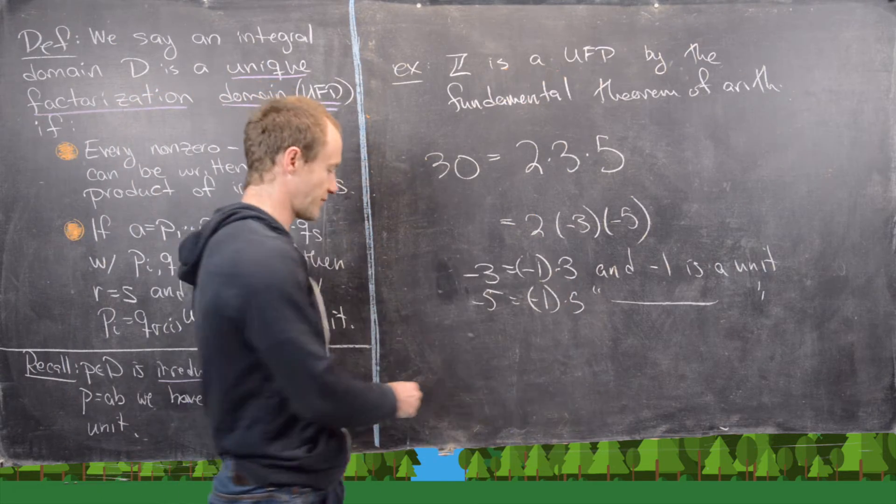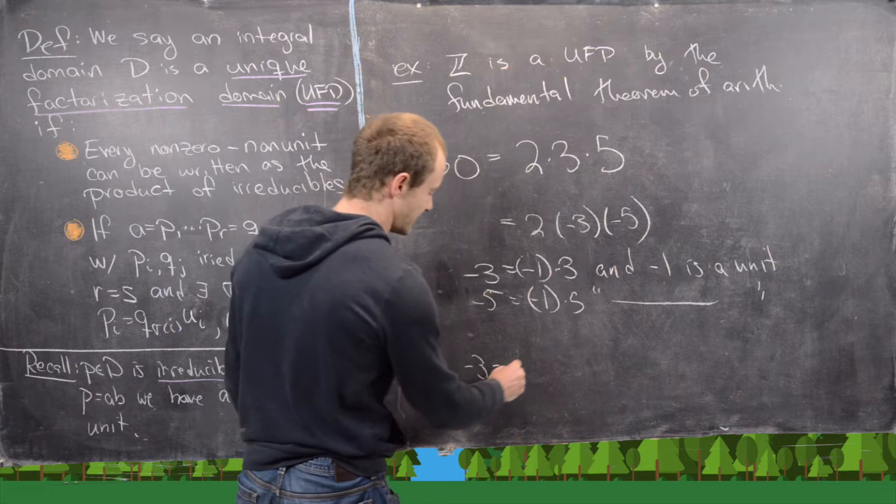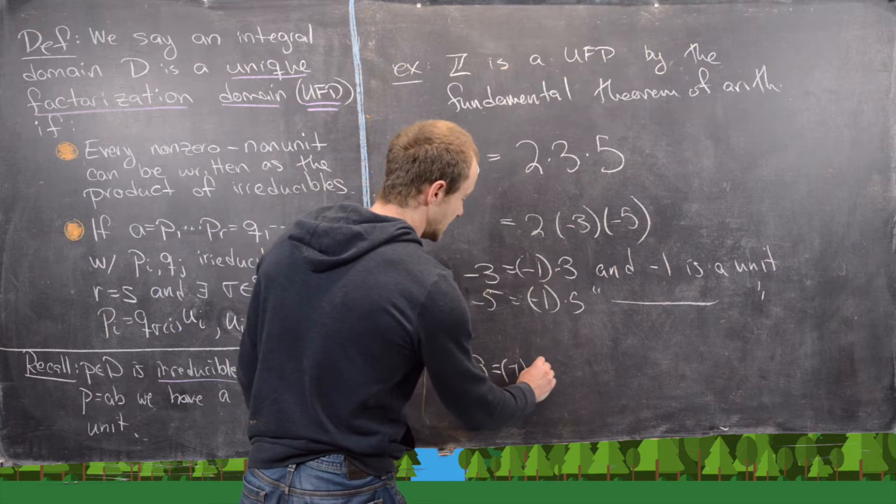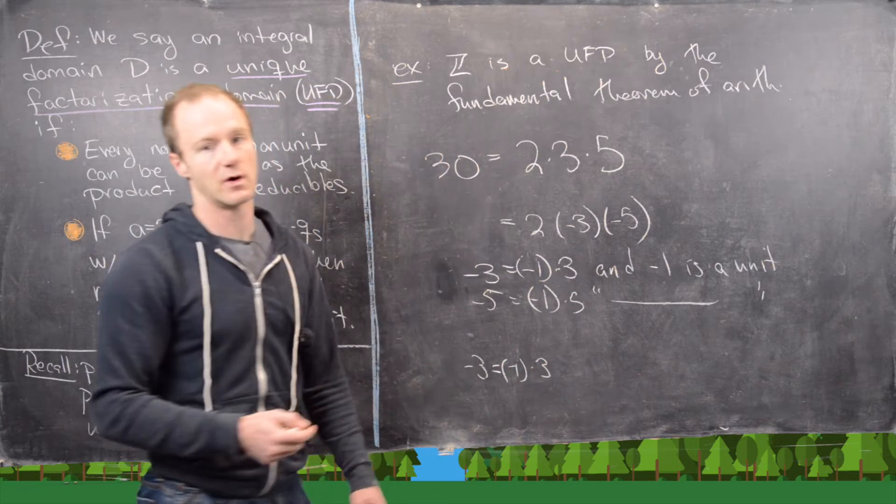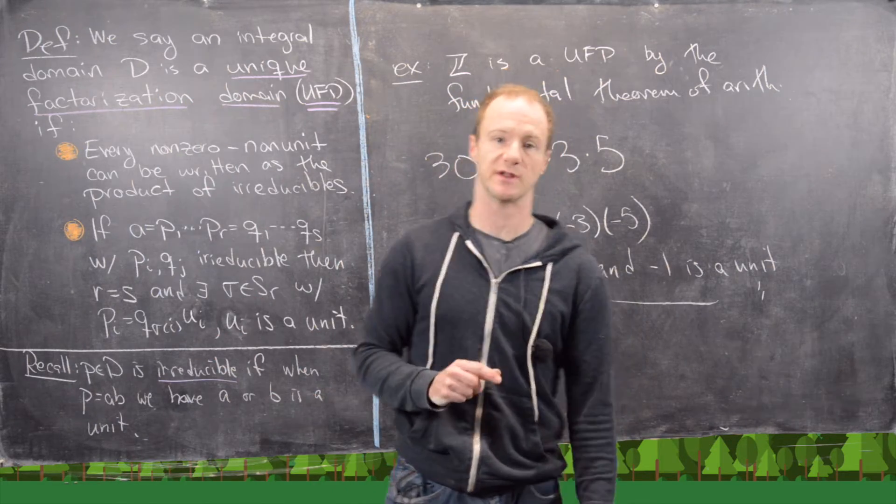And further, we know that negative 3 is an irreducible element because the only way to factor negative 3 is, again, negative 1 times 3, where negative 1 is a unit, and that is what it takes to be an irreducible element.